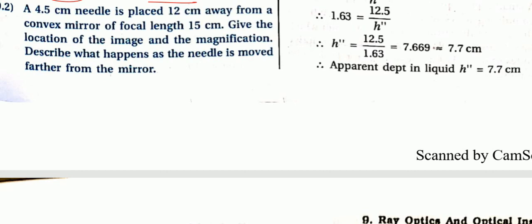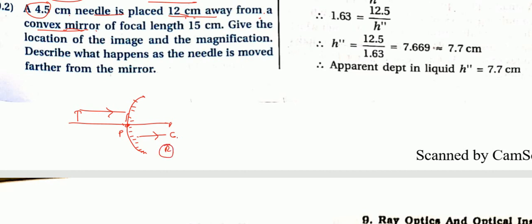A 4.5 cm needle is placed 12 cm away from a convex mirror. Object distance is always negative, so u = minus 12 cm. In a convex mirror, the inner surface has colors and the outer surface is the reflecting surface. The object is placed on the left-hand side.